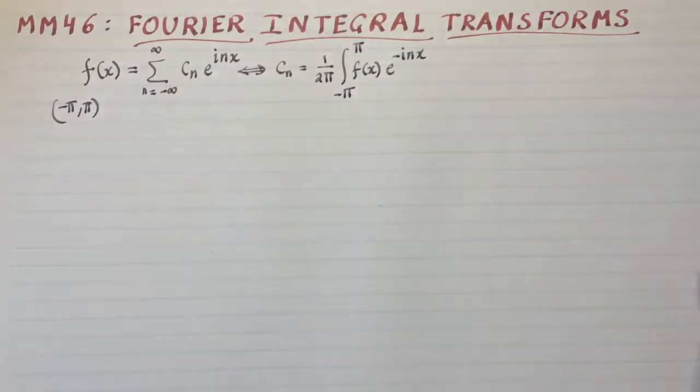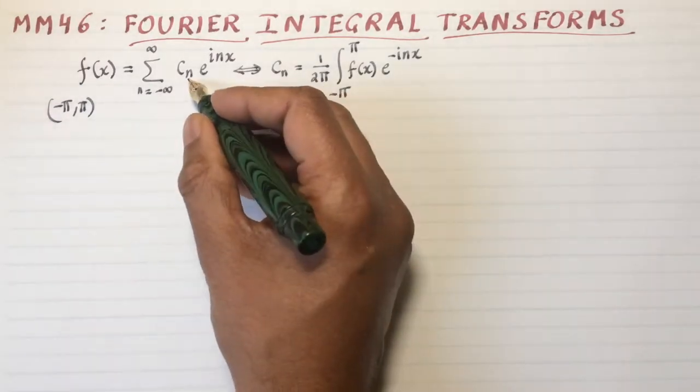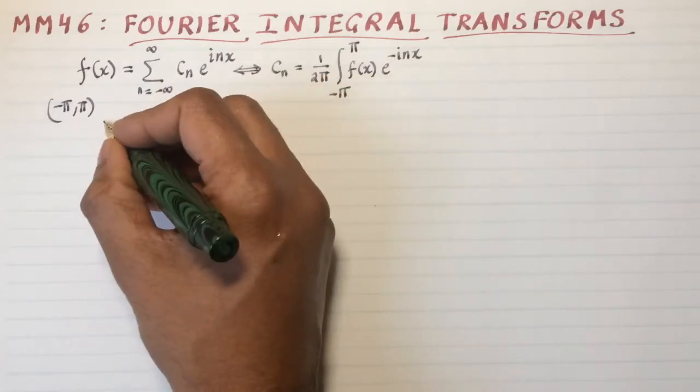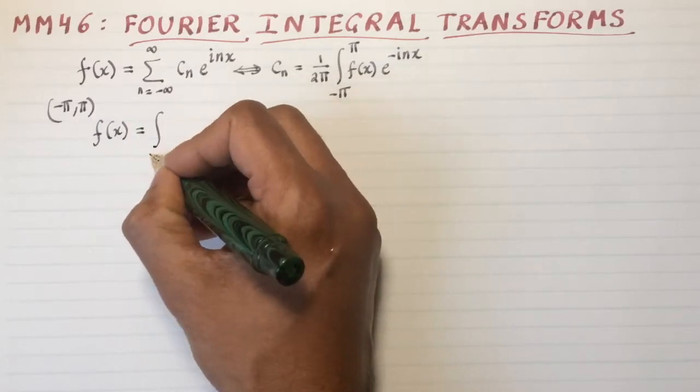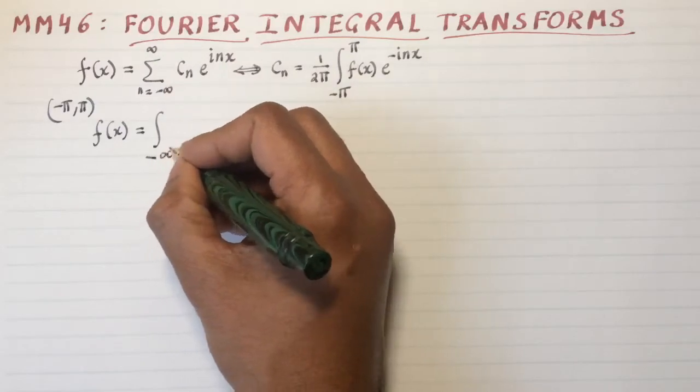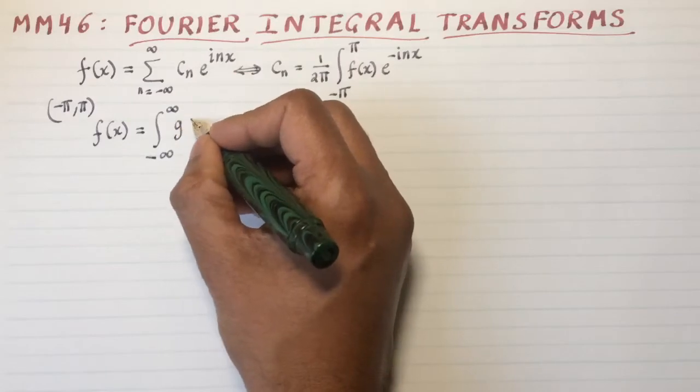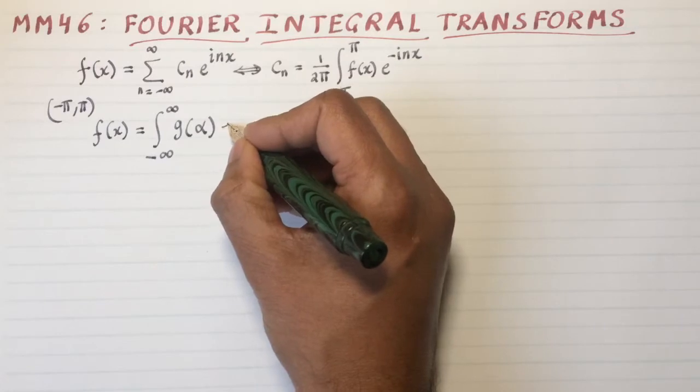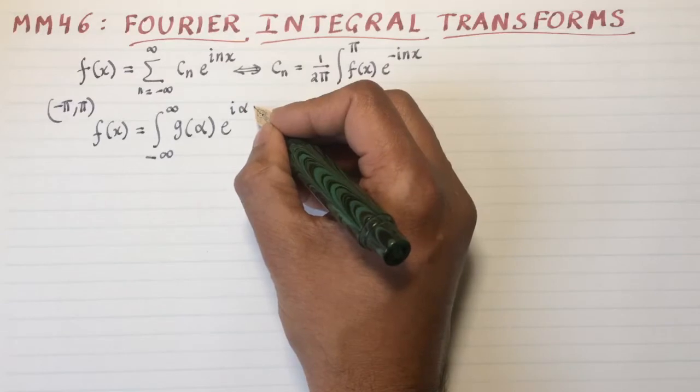What would the generalization of this be in the integral transform language? Now the variable n becomes a continuous variable and you're not summing anymore. Continuous variables have to be integrated. So the generalization of this is the integral from minus infinity to infinity, and instead of c of n, you're going to get some function known as g of alpha because alpha is now your n. The same e to the i nx except with alpha instead of n.